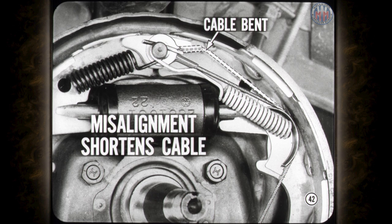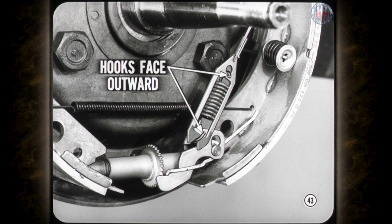A brake can over or under-adjust if the automatic adjuster cable is bent or not installed properly. Misalignment shortens the cable and causes the improper adjustment. Just make sure no cable ends are kinked when they're hooked up. If you install a new brake adjuster overload spring, make sure that the hooks face outward.